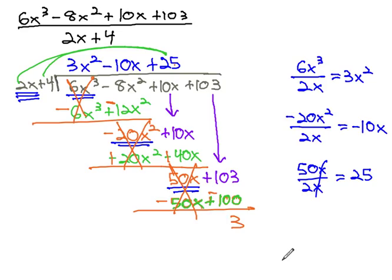As there's nothing else to bring down, we'll say we have a remainder of 3, and we have our final solution. 3x squared minus 10x plus 25 with a remainder of 3, using standard long division, just like arithmetic.